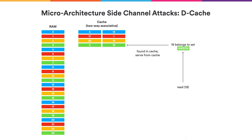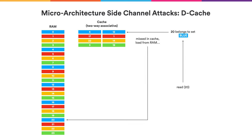If a memory access comes in, it can be very quickly determined which cache set it belongs to — basically the color of the corresponding memory cell. With another very quick lookup, we can determine whether the memory address is presently held inside the cache. If a memory access comes in to a cell not presently held in cache, this can also be determined very quickly; however, the requisite data must then be fetched from RAM. The purpose of the cache is to take this data and put it into the cache such that subsequent accesses to the same address are significantly faster.